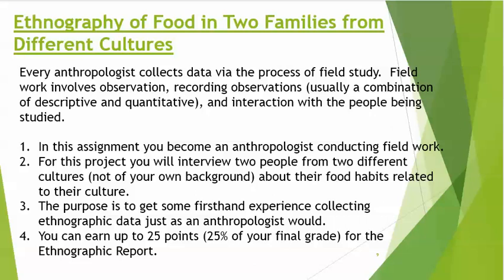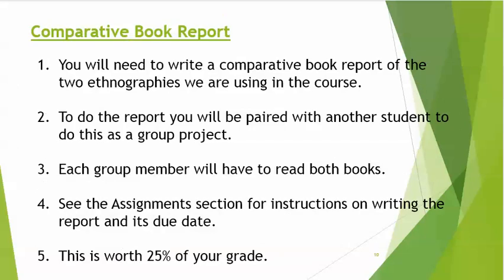You can earn up to 25 points, or 25% of your grade, for this report. For the comparative book report, you will need to write a report on the two ethnographies we're using for the course — the two books. You will be paired with another student to do this as a group project, but each group member will have to read both books. See the assignment sections for instructions on writing the report and its due date. This report is worth 25% of your grade.